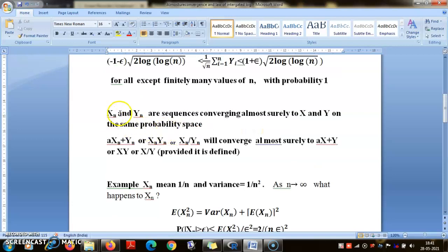I had told you that if Xn and Yn are two sequences which are converging almost surely to X and Y, then what happens to aXn + Yn, Xn·Yn, and Xn/Yn? The answer is very simple: they almost surely converge to their respective limits aX + Y. This follows from the algebra of limits.